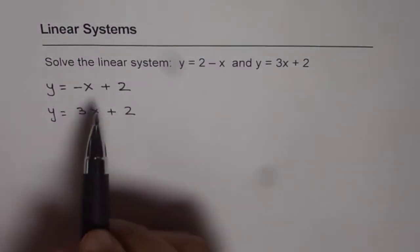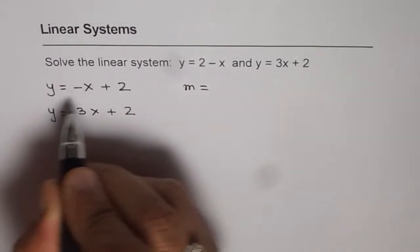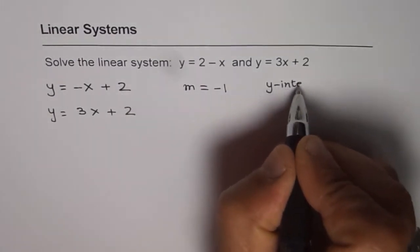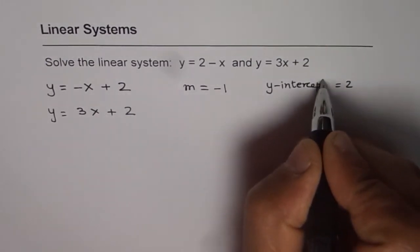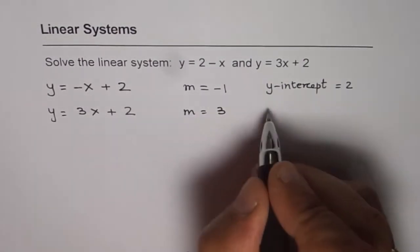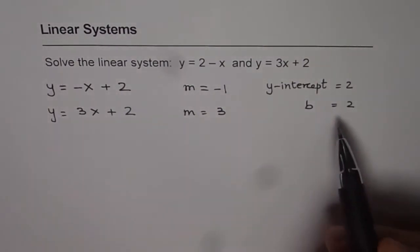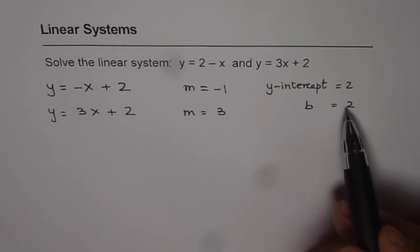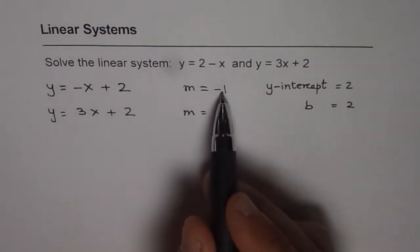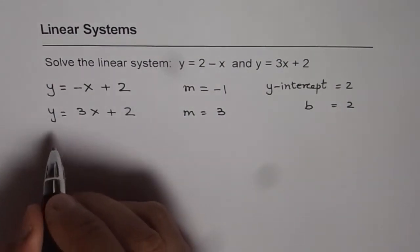Comparing both equations, the first thing we should analyze is the slope. The slope of the first equation is minus 1 and the y-intercept is 2. The slope of the second equation is 3 and the y-intercept, which we call b, is also 2. Since the slopes are different, this indicates the system will have one solution.